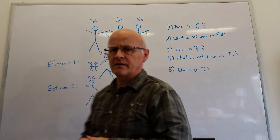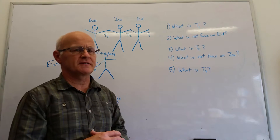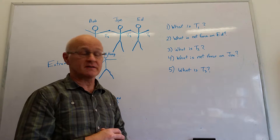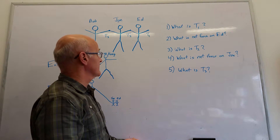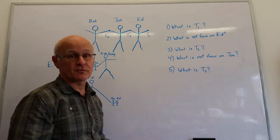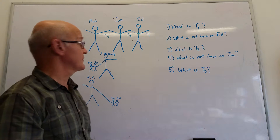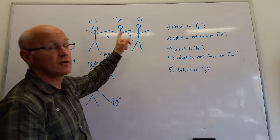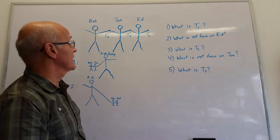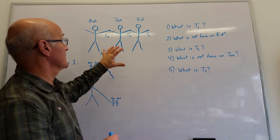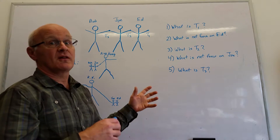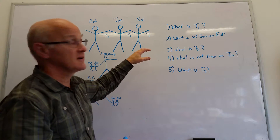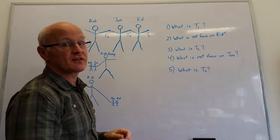Here is another explanation for unit 3's homework on three boxes. I've decided to replace the boxes with three dudes: Bob, Joe, and Ed. I'm showing you what happens in a real-life situation where these three guys are being accelerated by somebody pulling on Ed's leading arm.